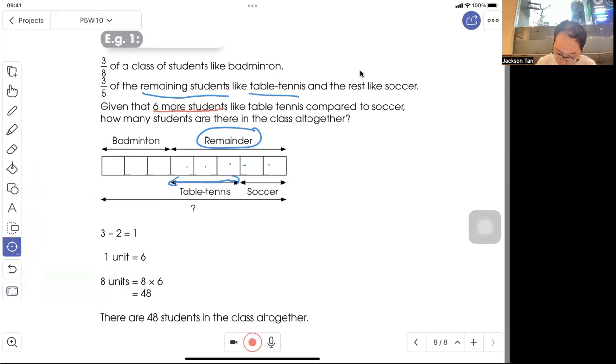Table tennis is 3 units, soccer is 2 units. 3 minus 2 equals 1 unit. So 1 unit equals 6 students. The whole class is 8 units, so 8 × 6 = 48. There are 48 students in the class altogether.